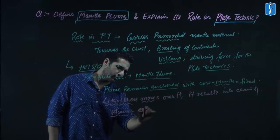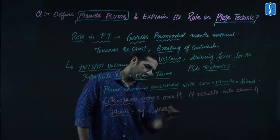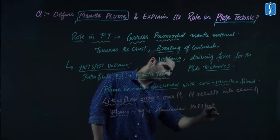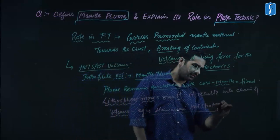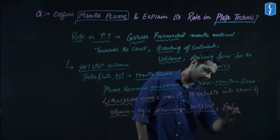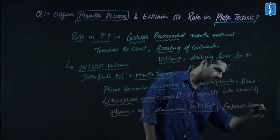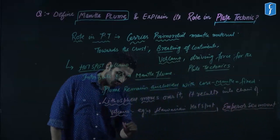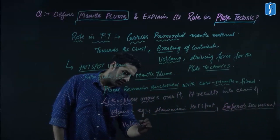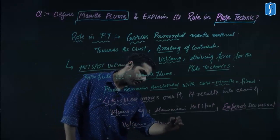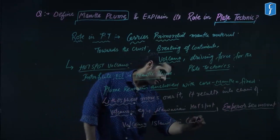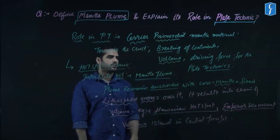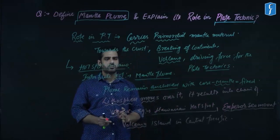Examples of this include the Hawaiian hotspot and the Emperor Seamount volcanic island chain in the central Pacific. These are roles played by mantle plumes in understanding plate tectonics.